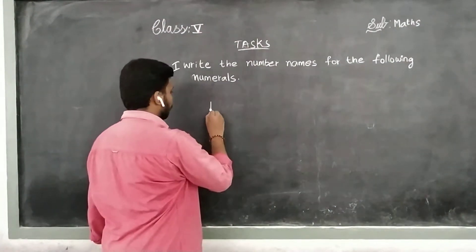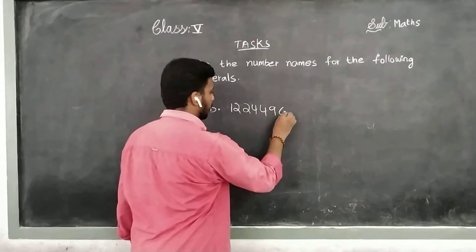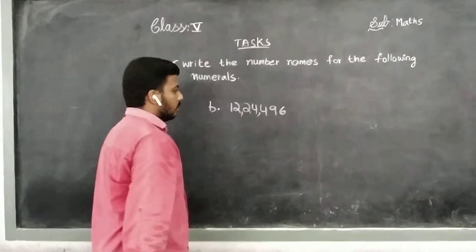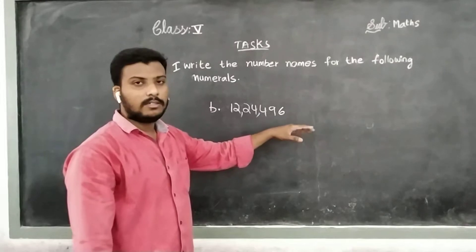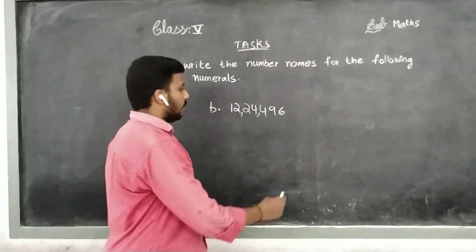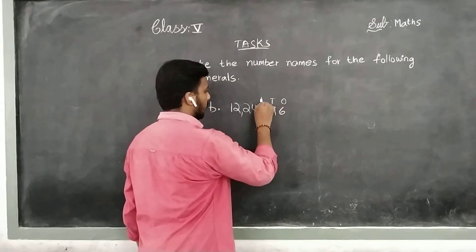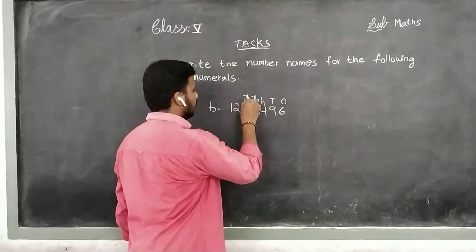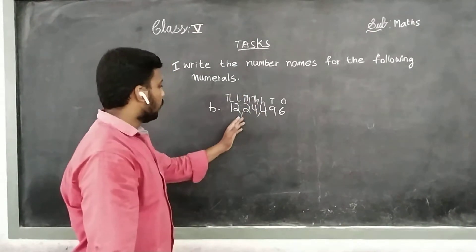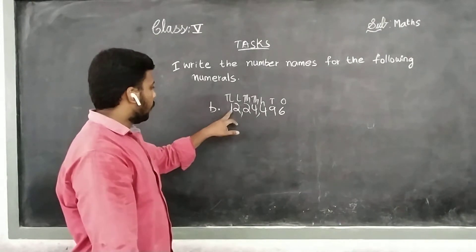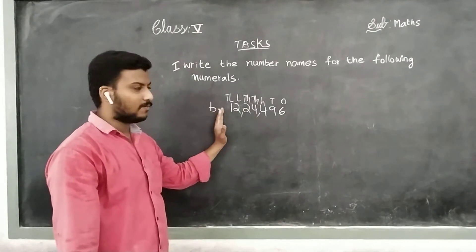Children, next one. Again we have to convert this numeral into the number names or word full form. See, again we have to identify the place value system: that is ones, tens, hundreds, thousands, ten thousands, lakh, and ten lakh. See, one more value is added — ten lakhs. We have to start from the left side because there is a bigger value: ten lakh.